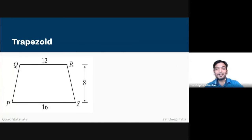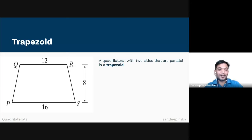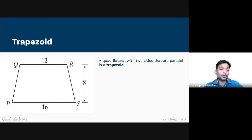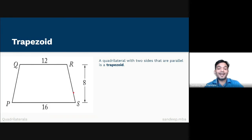In this slide we will study the trapezoid. A quadrilateral with two sides that are parallel is a trapezoid. For example, in the figure PQRS, QR is parallel to PS but QP is not parallel to RS. The area of trapezoid PQRS may be calculated as follows.